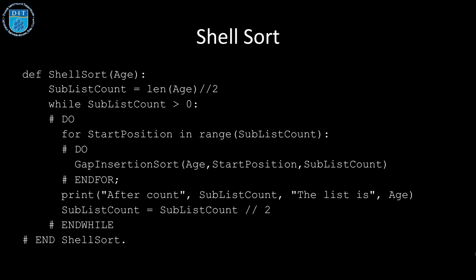Then we call another method called gap insertion sort. It's exactly our insertion sort code, except instead of doing insertion sort by one value each time, we do it by this value gap, which in this case is a variable called sublist count, and we can have our printout that shows how the list is after each iteration of the gap insertion sort.